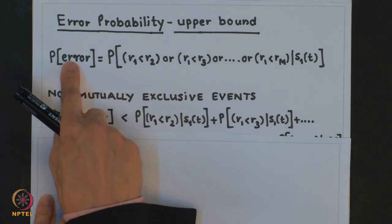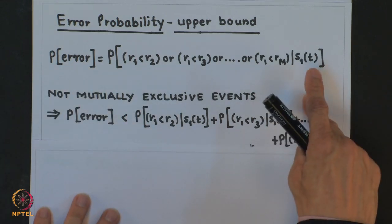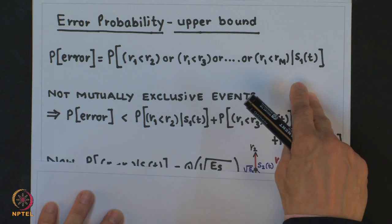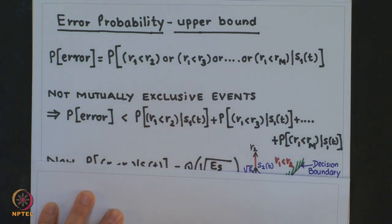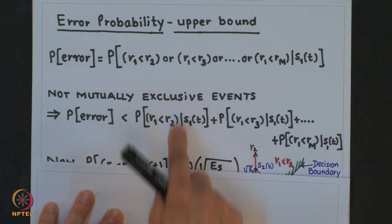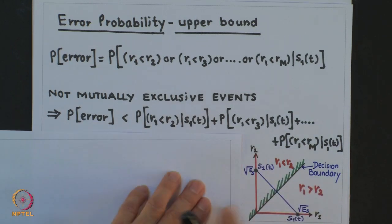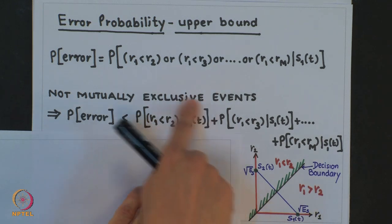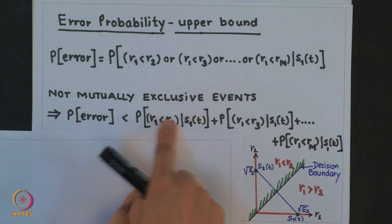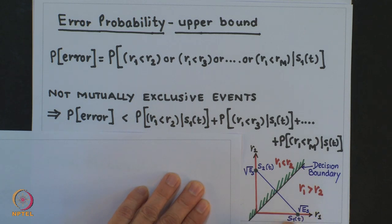We rewrite the probability of error as less than the sum of these terms. Looking at the first term — P(R_1 < R_2 | S_1(t)) — we examine the signal constellation showing only the two axes corresponding to S_1(t) and S_2(t), that is φ_1(t) and φ_2(t). The decision boundary is the perpendicular bisector of the line joining the two signal points.